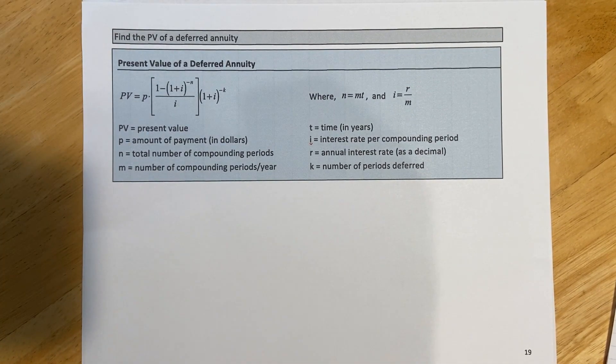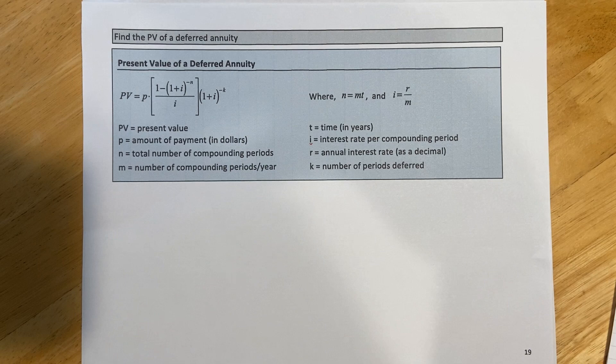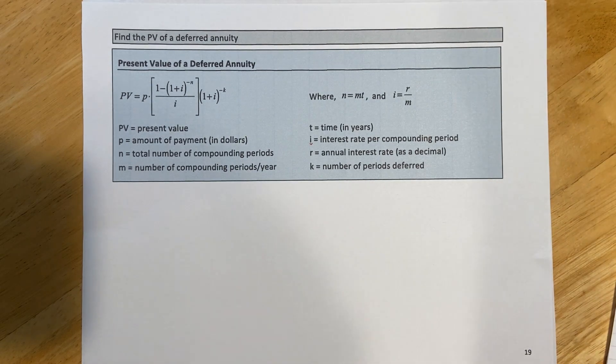So a deferred annuity, it's like our present value annuities where we have a chunk of money, you know, we hit the lottery and it's going to pay out over time. But with the deferred annuity, what's going to happen is we're going to postpone getting those payments for some amount of time.